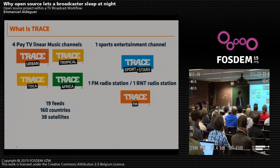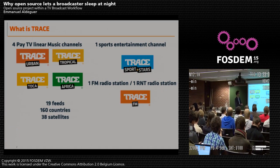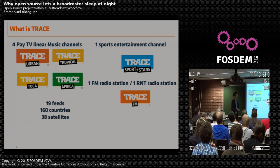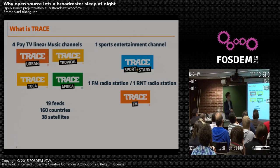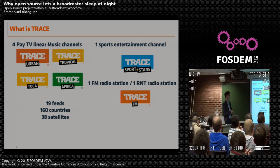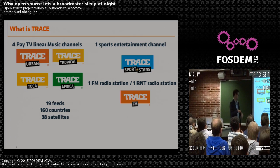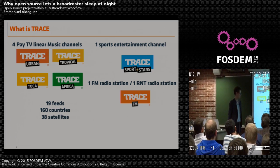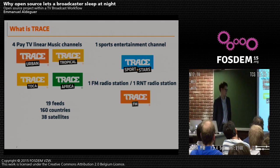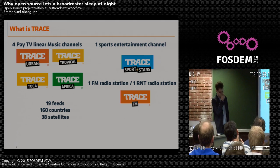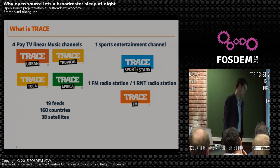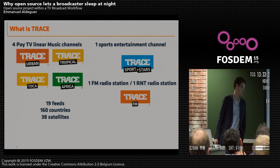Trace is a bunch of different kinds of channels. We have 4Play TV, linear music channels, sports entertainment channels. We have one radio station FM and one DAB+ radio station. We deal with 19 feeds, all produced and broadcast from Paris and broadcasted in 160 countries over 38 satellites.